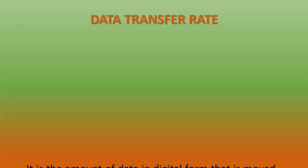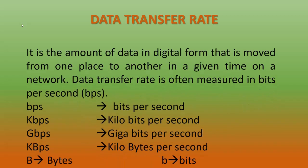Now we can see what is data transfer rate. Data transfer rate means the amount of data that can be transferred from one place to another in a given time on a network is known as data transfer rate. Data transfer rate is measured in terms of bits per second, or BPS.